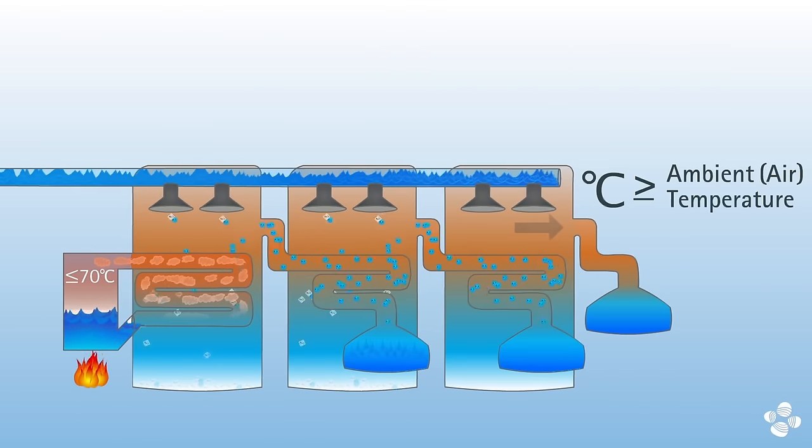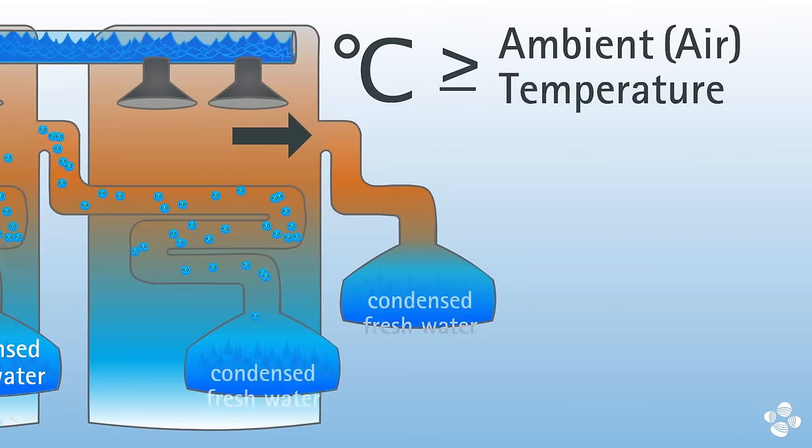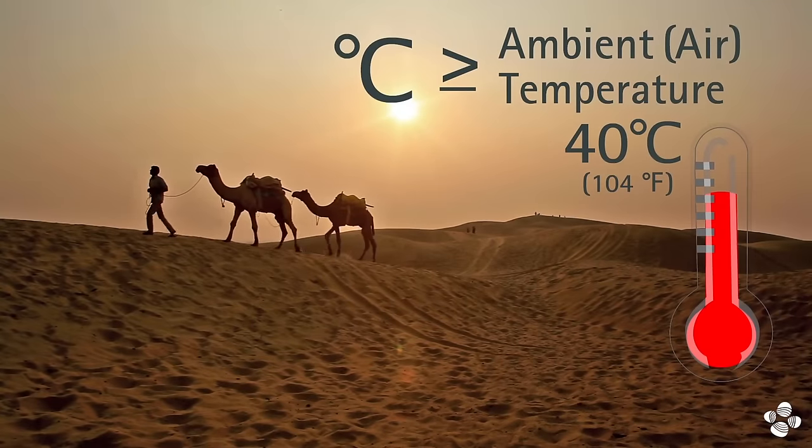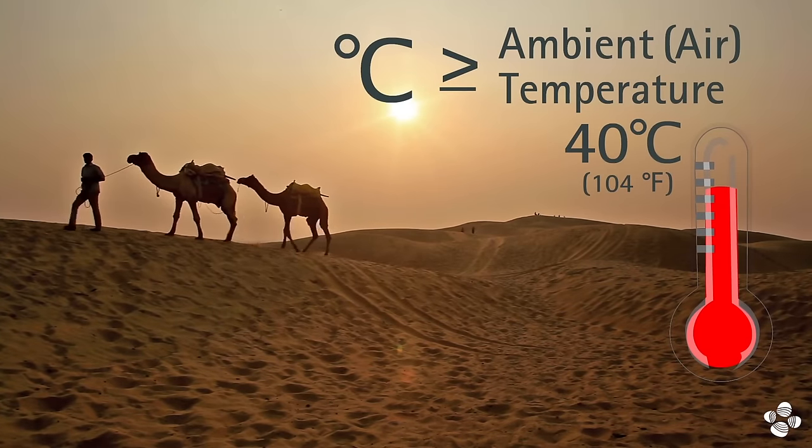The output temperature has to be at least the ambient temperature so that the water will condense. This temperature can often exceed 40 degrees Celsius in arid places, where desalination is most needed.